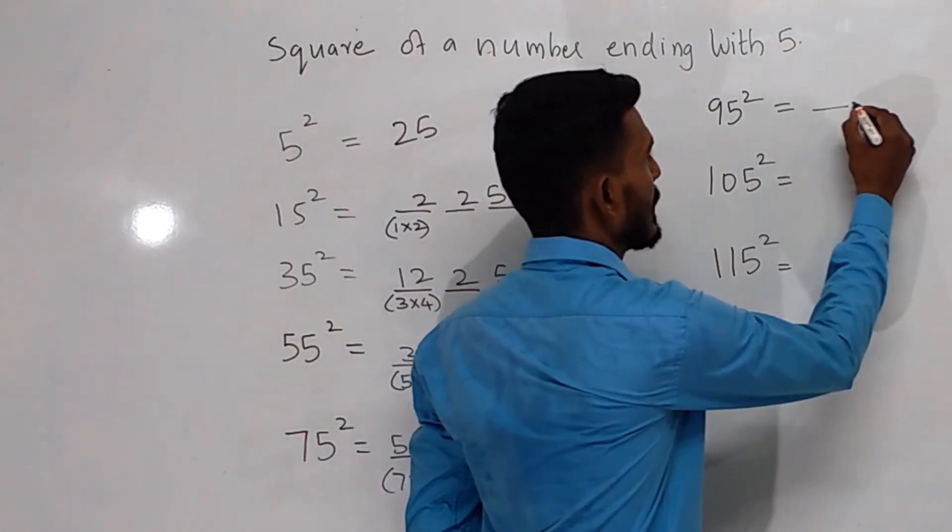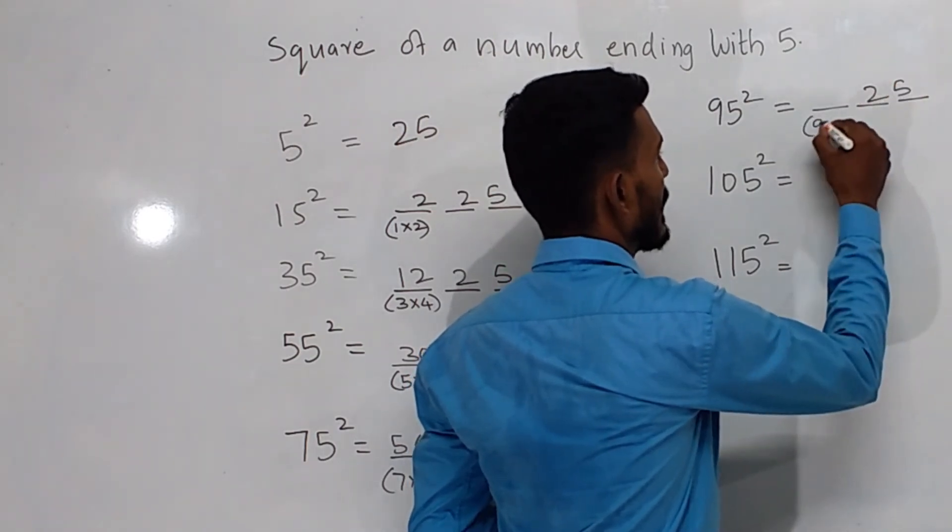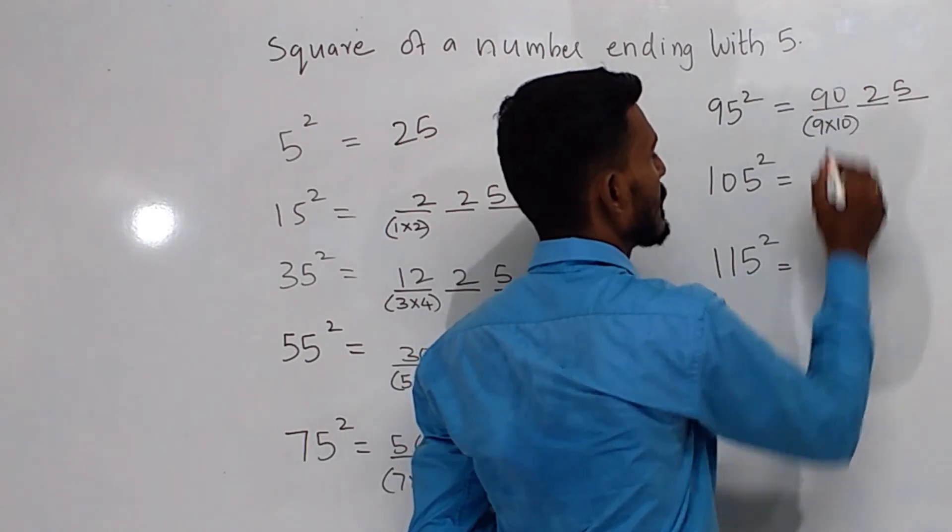Again, the same thing, write down 25 here, 9 into 10, you will get 90, that is 9025.